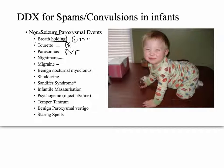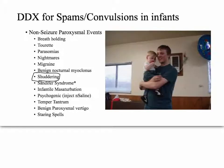Benign nocturnal myoclonus is generalized jerking and spasming in your sleep. Sometimes it requires nighttime video monitoring for the physician to watch, and sometimes it can even require an EEG to distinguish it. Shuddering attacks kind of look like shivering and may be a forerunner to other kinds of seizures.